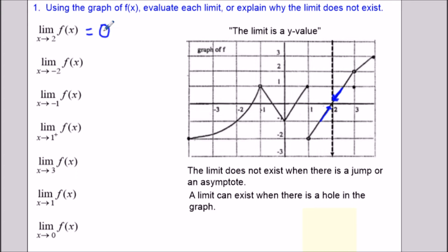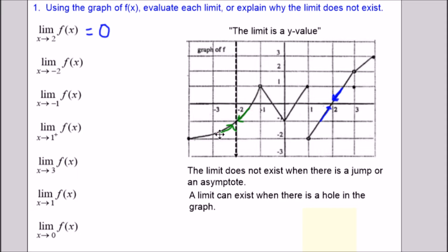For the limit as x approaches negative 2, you can see how the graph is nice and connected in that neighborhood. The graph is heading towards a height of negative 1, so that's our second limit.